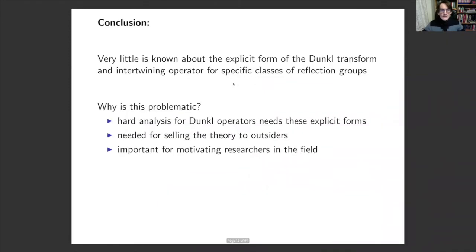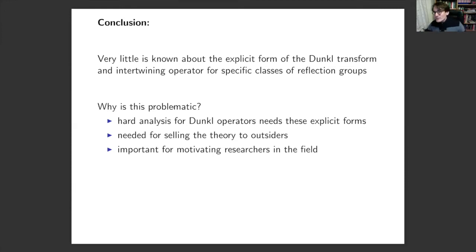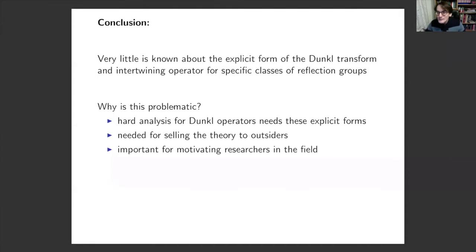Some conclusions: there is very little known about the explicit form of the Dunkl transform and the intertwining operator for specific classes of reflection groups, which is problematic. First, if you want to do hard analysis for Dunkl operators, you really need these explicit forms — the amount of abstract results we can get is more or less exhausted. It's also needed for selling the theory to outsiders such as mathematical physicists, and for motivating researchers, since these abstract results all date 10-20 years back.